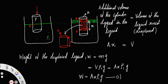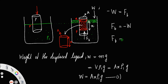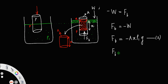According to Archimedes' principle, the weight of the liquid displaced is equal to the buoyant force. The buoyant force is acting upward, but the weight is in the downward direction, so we put a minus sign. Therefore, F_b equals minus A x rho 1 g. From Newton's law, force F_b is also equal to mass times acceleration — let us call that equation number 3.